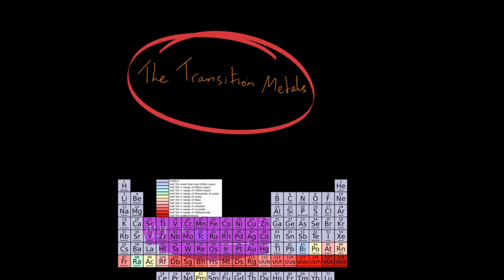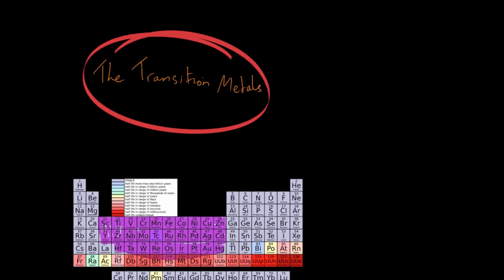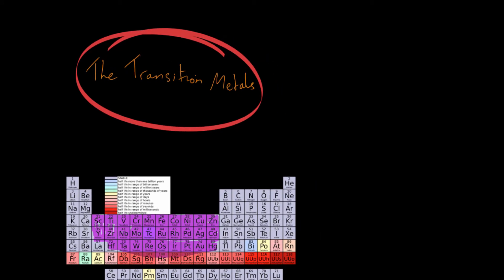Now first of all, it's important to recognise that even though they have these different properties, they are metals. So they possess typical metal properties. And those metal properties are that they are good conductors of heat and electricity. Obviously we use copper for most of our wires and this is copper right here. It is a transition metal.